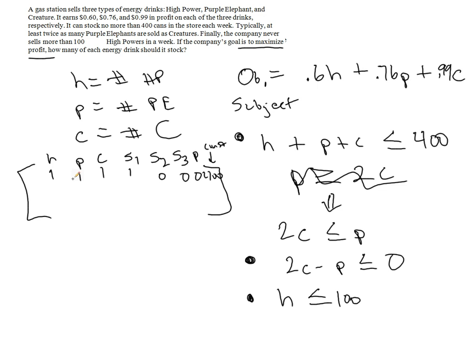Next I have 2C minus P. So I have 0 H's. I have negative 1 P. I have 2 C's. 0, slack variable number 2 takes place so that it can equate exactly to 0.